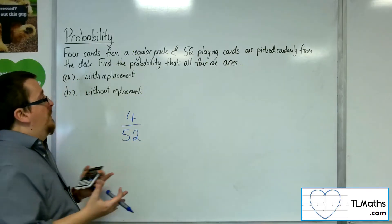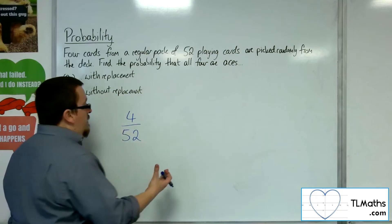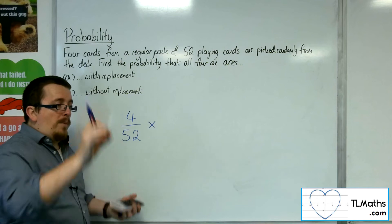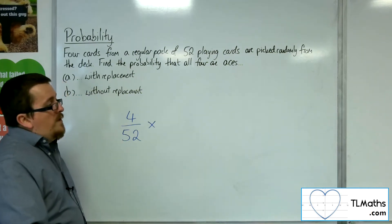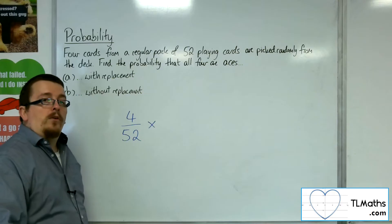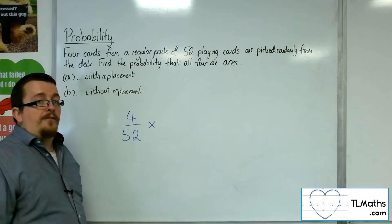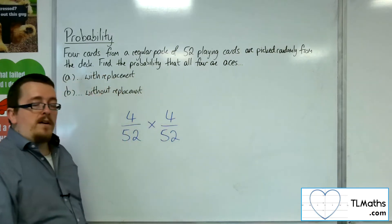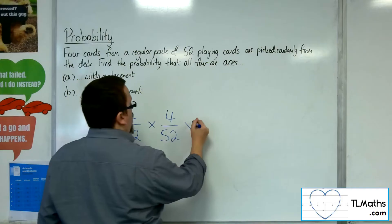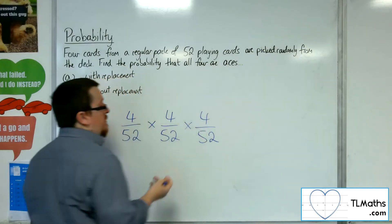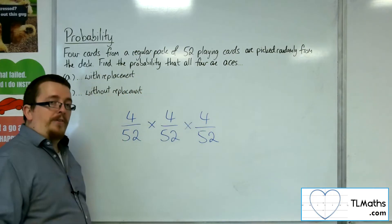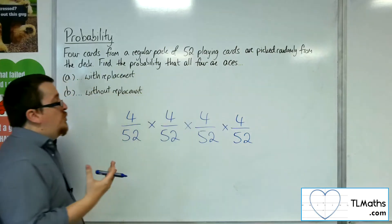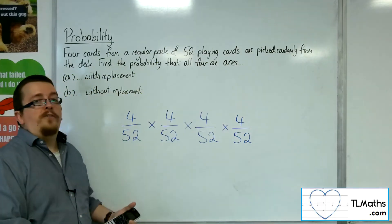Then, if I replace the card, well, now I've still got four aces to pick out out of the 52 cards. Once I replace the card, I've then got 4 out of the 52 again, for my third choice. I replace the card. So I've now got 4 out of the 52 again. So this is just 4 over 52 to the power of 4.